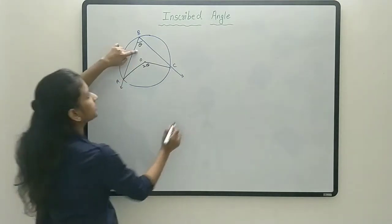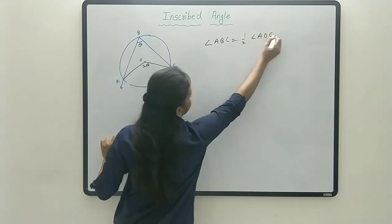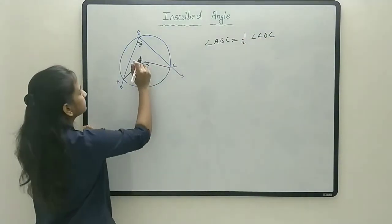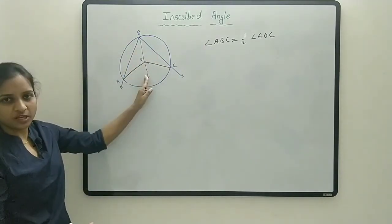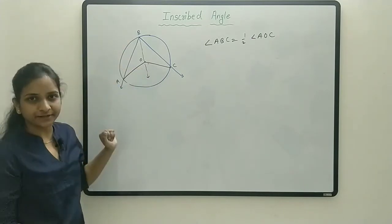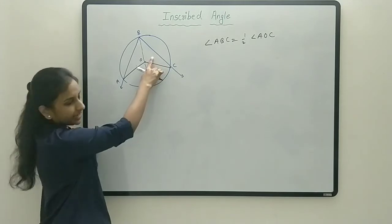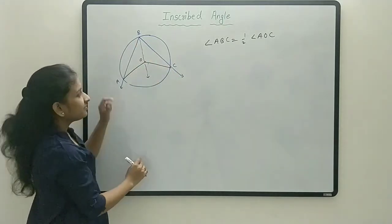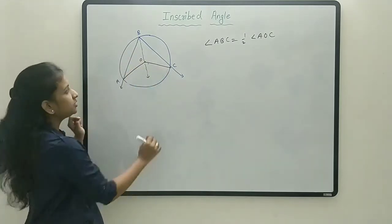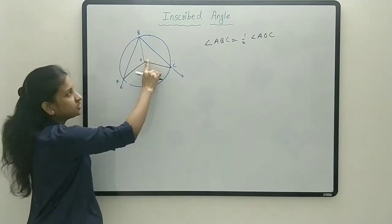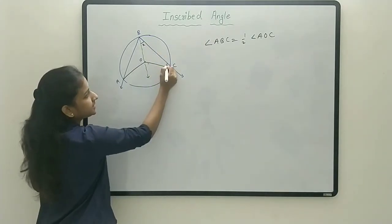Let's prove this theorem — that angle ABC is half of angle AOC. For that, let's do one small construction: we join BO, connecting the vertex B to the center O. Now consider triangle BOC.